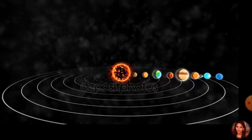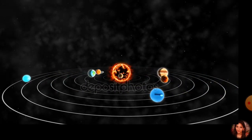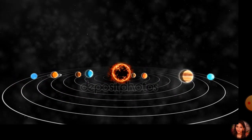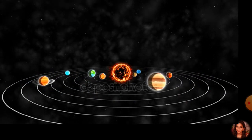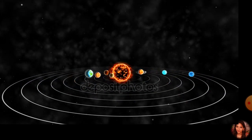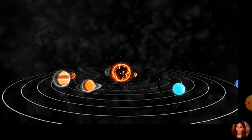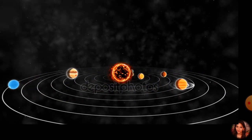Pluto does not fit this definition, so it is no longer a planet of the solar system. Now, a planet has a definite path in which it revolves around the Sun. This path is called an orbit, and the time taken by the planet to complete one revolution is called its period of revolution. The period of revolution increases as the distance of the planet increases from the Sun.